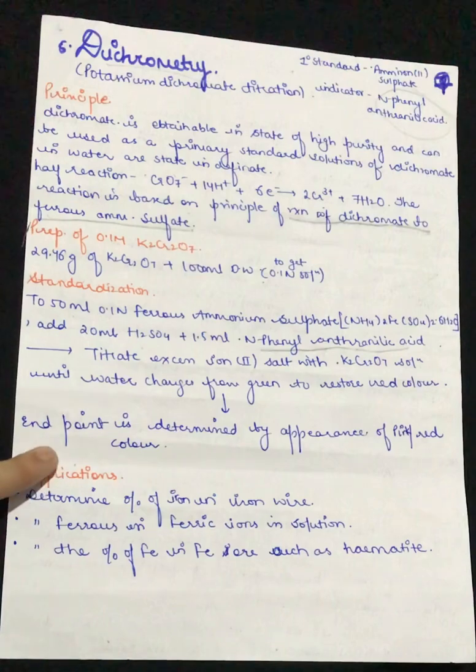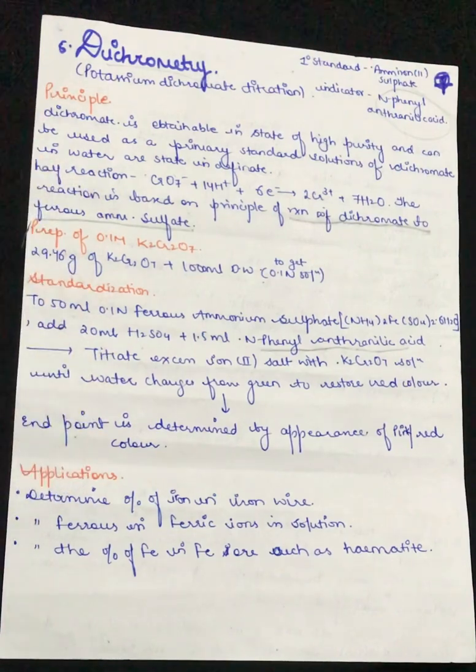The end point is determined by the presence of pink or red color. Either we will be getting a dark pink color or a red color at the end point, and this change of color will signify the end point. Whatever we have found at the end point, we will be able to know our unknown solvent concentration.